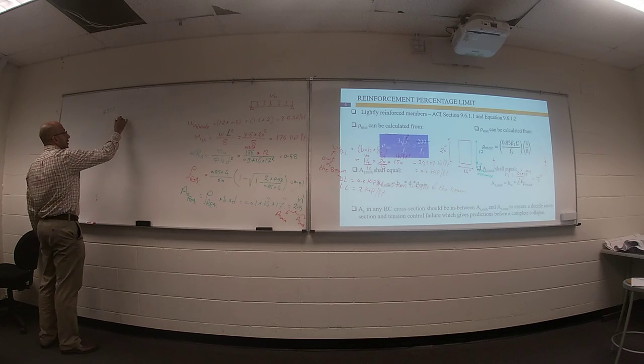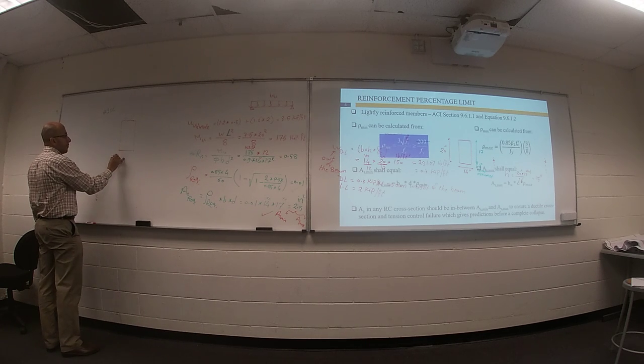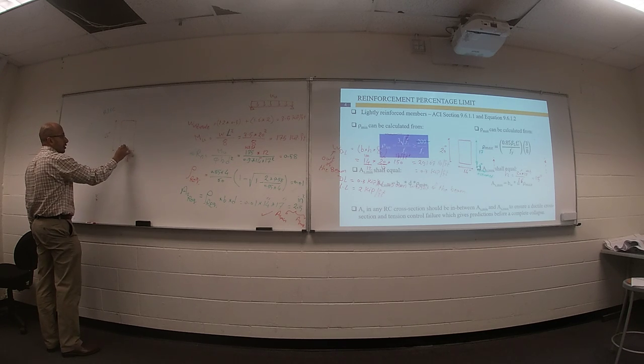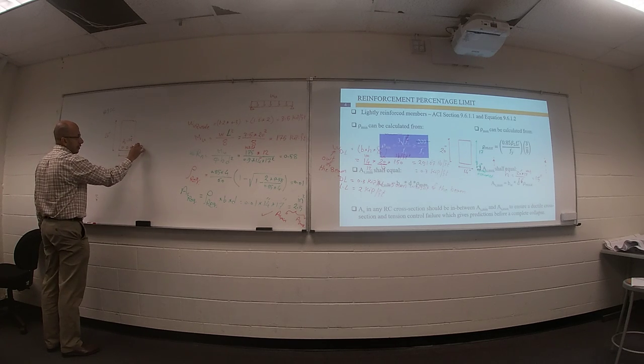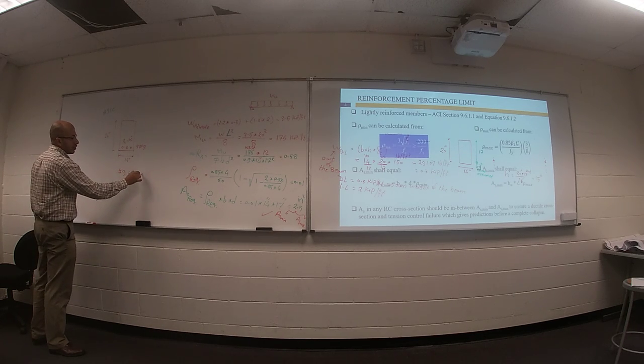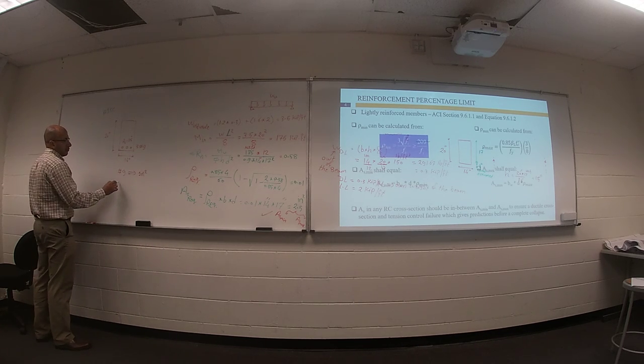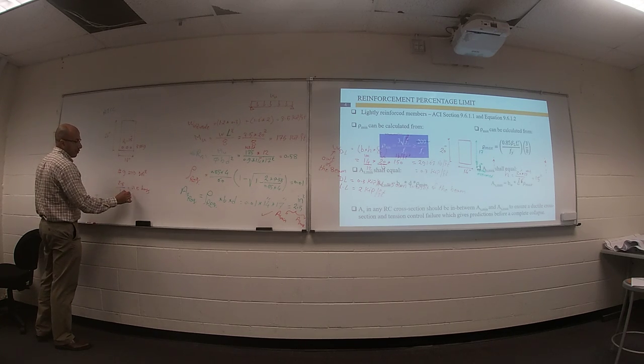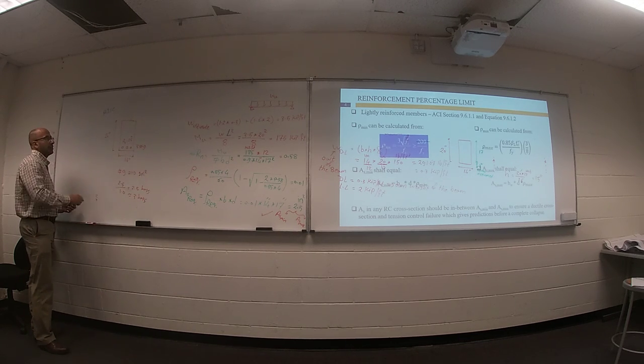So I think finally, if this check is okay, finally your beam will be 14 inch by 20 inch. You will need here 2.5 - I think you can pick 3 number 9 bars. Number 9, area equals 1 inch squared. So 2.5 divided by 1 inch squared equals 2.5 bars. You can round it to 3 bars. So number of bars will be 3 number 9 bars. Here is your design.